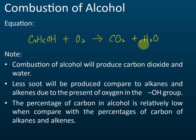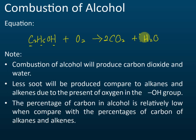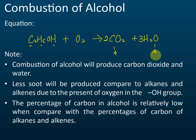Now we need to balance the equation. We have two carbons, so we write 2CO₂. We have five hydrogens plus one more — six hydrogens total — so we write 3H₂O. For oxygen, we have four from CO₂ and three from water, giving seven oxygens total on the product side.